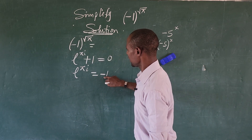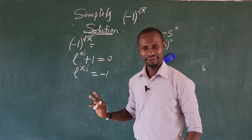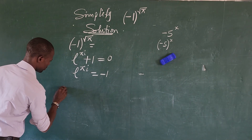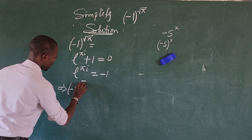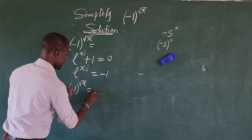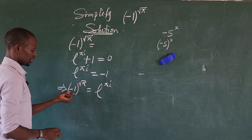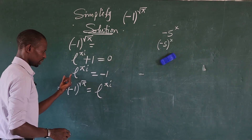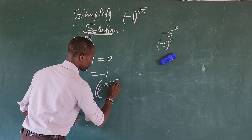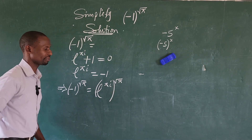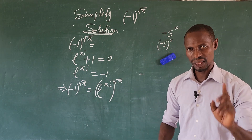From Euler's identity, we can substitute the value of minus one. So minus one is equivalent to e to the power of pi·i. We can now rewrite our expression: (-1) to the power of square root of pi becomes e to the power of pi·i, all raised to the power of square root of pi.